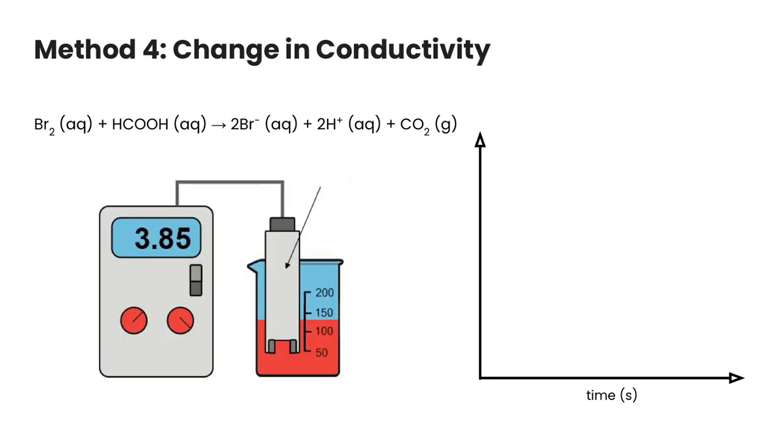And finally, the last method is a change in conductivity. So this is great if you have a difference in the total charge between your reactants and your products. So in this reaction here, our reactants are all neutral. But our products, we have two negative bromines and two H pluses. So we're creating, even though it's a neutral overall charge, we are creating ions here.